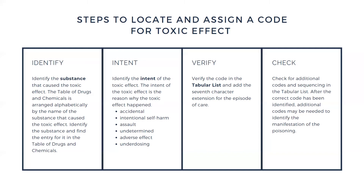Adverse effect: an adverse effect is an unintended effect caused by a substance that is correctly prescribed and administered. Unlike accidental poisoning, the adverse effect was caused when a patient was supposed to take a substance and did so correctly, but it still resulted in some sort of unintended consequence. Underdosing occurs when a patient takes too little of a prescribed substance and suffers an unintended consequence. Even if a patient purposefully underdoses, it's not coded as intentional self-harm unless the patient underdosed specifically as an act of self-harm.